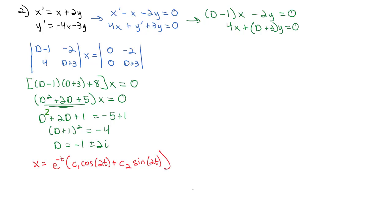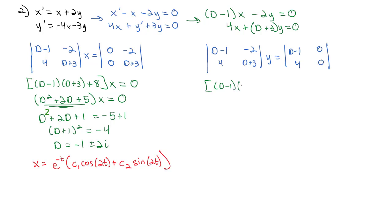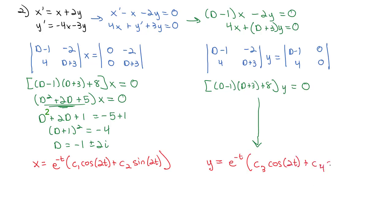We still need to find y. Setting up similarly: d minus 1, negative 2, 4, d plus 3 times y equals the determinant with the second column replaced by zeros, keeping d minus 1 and 4. Since it's homogeneous, we get d minus 1 times d plus 3 plus 8 times y equals 0 — essentially the same equation. So y equals e to the negative t times c3 cosine of 2t plus c4 sine of 2t.